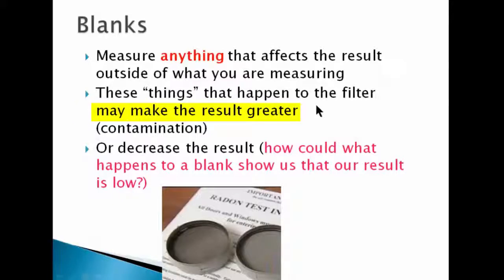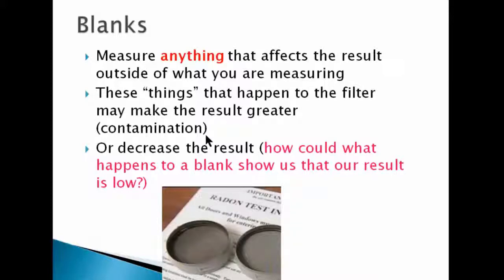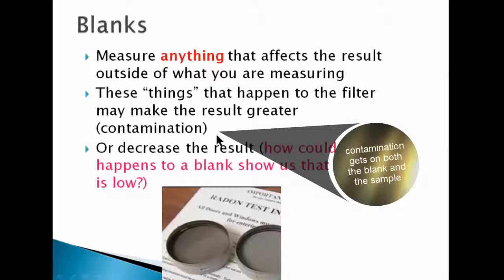Some things that can happen to a filter or device can make the result greater. Contamination is one thing everybody can easily imagine: if you've got a blank filter and filters you're going to put in your mini ball, and you lift the blank filter out of the plastic bag with the filter you're going to put in the mini ball and put it back, then label it as a blank and send it to the lab — well, what if there was already dust in your plastic bag that got on both filters? The blank shows a result, and that's contamination. You know to subtract that off of your mini ball filter, because it got on both of them. That's the purpose of a blank.